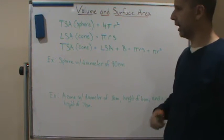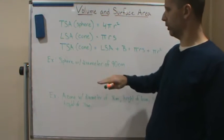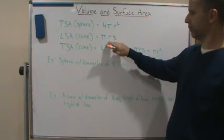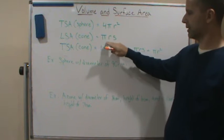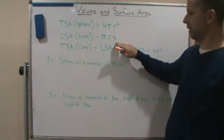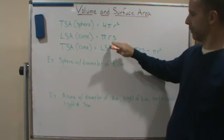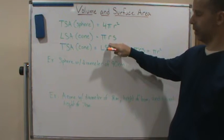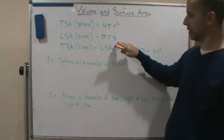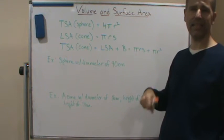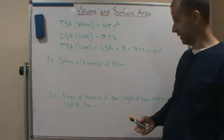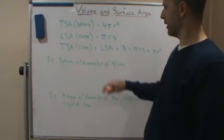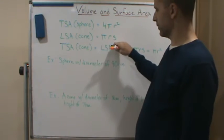The lateral surface area of a cone is given by just the surface area of the side, which is pi r s, where r is always the radius, and s in this case is the slant height. So s represents the slant height, and that's lateral surface area.